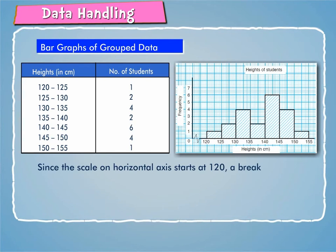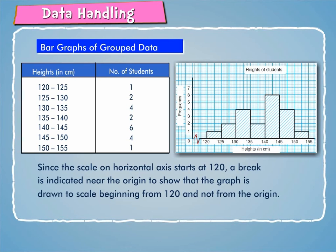Since the scale on horizontal axis starts at 120, a break is indicated near the origin to show that the graph is drawn to scale beginning from 120 and not from the origin.